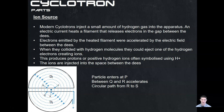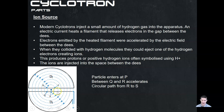This produces protons or positive hydrogen ions, which we denote as H+. This ion is then injected into the space between the d's. The first process is just how we generate this charged particle — by generating electrons in a hot filament, injecting hydrogen gas, and making them collide to knock out electrons. The particle enters at point P. Between Q and R it accelerates across the gap, then follows a circular path from R to S, eventually getting faster and faster until it's thrown out at very high speed.